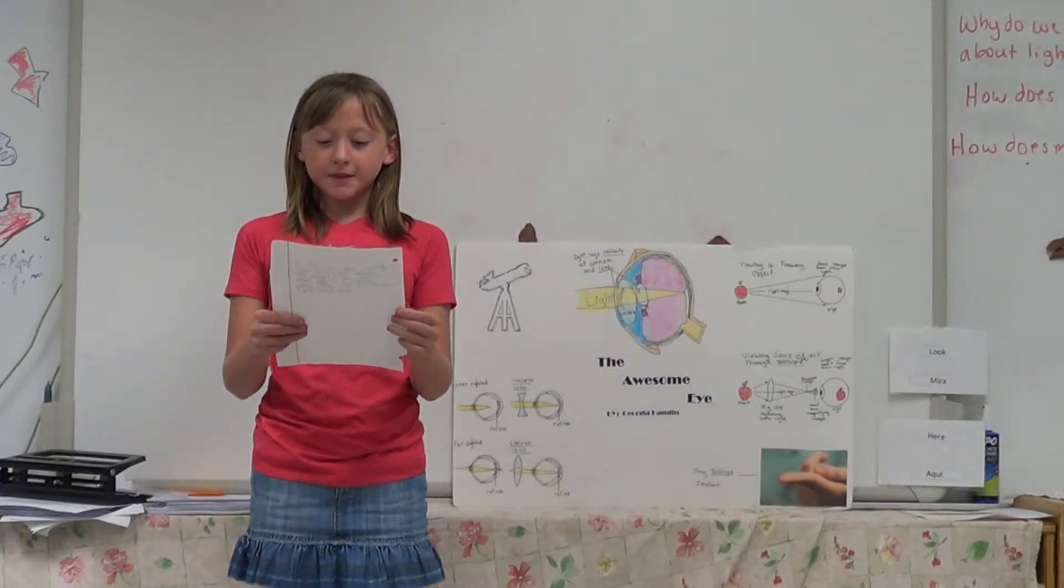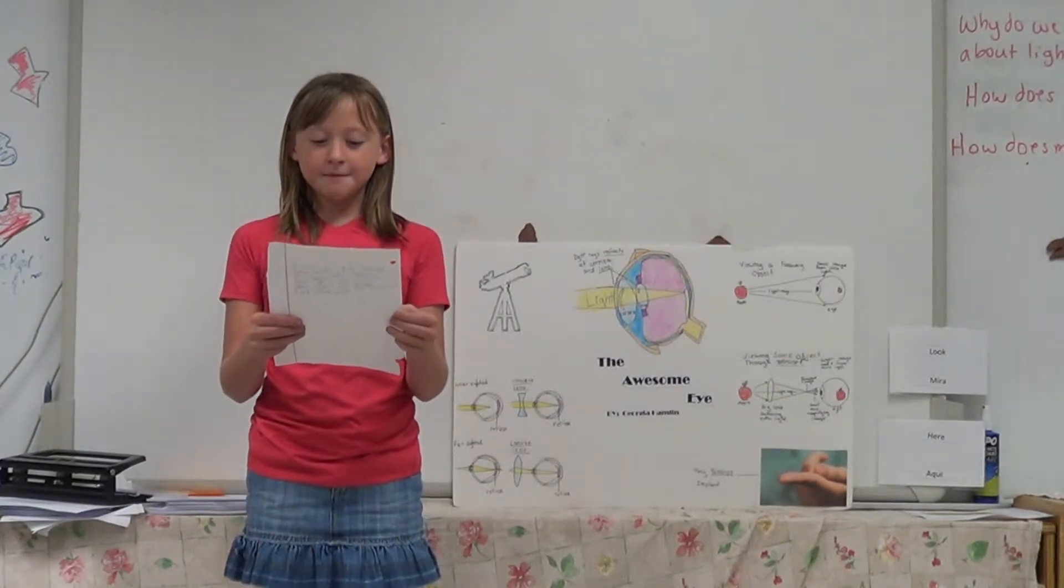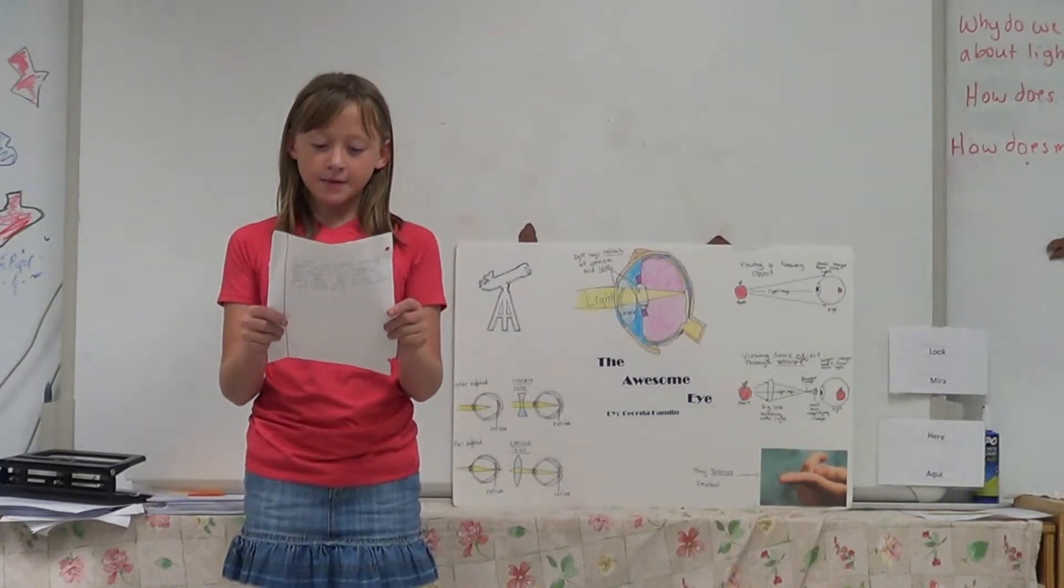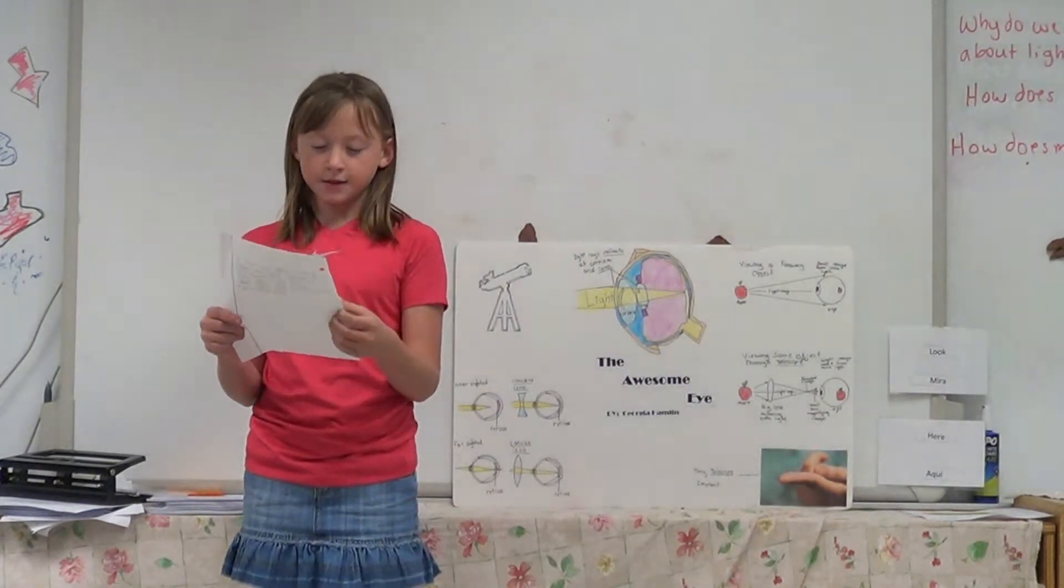The lens in the eye helps focus light and pictures on the retina. When light rays enter the eye, they refract at the cornea and the lens.